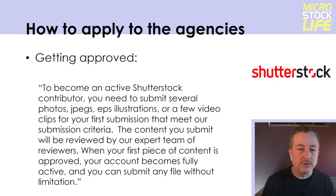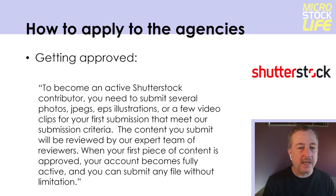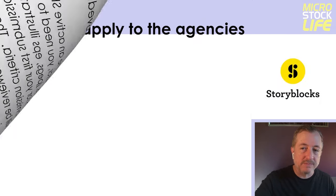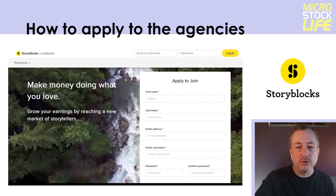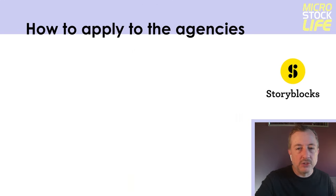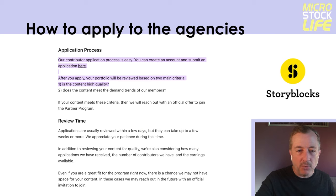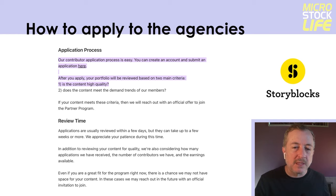To get approved at Shutterstock, you need to submit several photos — JPEGs, EPS illustrations, or video clips for submission, and they have to meet their submission criteria. The content is reviewed by their expert team of reviewers, and when the first piece of content is approved, you're ready to start submitting files without limitations. At Storyblocks, they want high-quality content that meets the demands of members. If you meet both those criteria, they'll send you an offer to join the partner program. Review time can be within a few days but can take up to a few weeks or more.